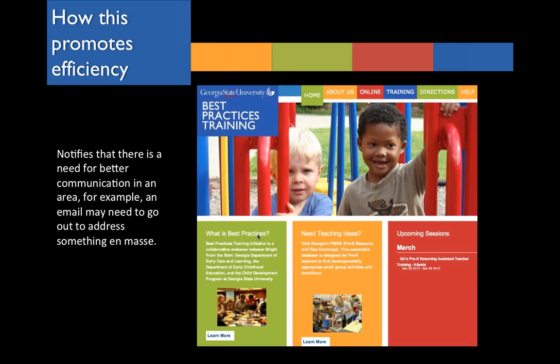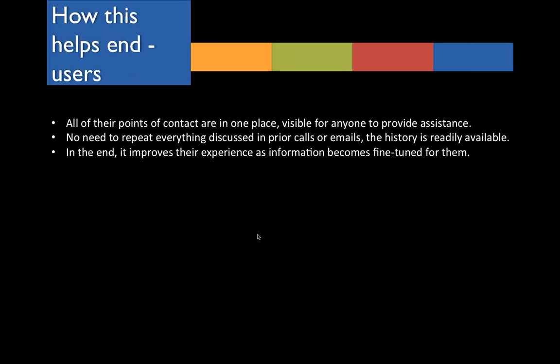So how does this promote efficiency? It improves information presented on our website, notifies us when there's a better need for communication in an area — for example, an email may need to go out to address something en masse — and program directors can see the value of having someone on the phones. Basically, Customer Relationship Manager covers your bases. And how does this help our end users? Their points of contact are in one place, so if they say they've called several times, it's all located in one place and you can browse over it. There's no need to repeat everything every time that person calls because there's a contact history. In the end, it improves their experience as information becomes fine-tuned for the end user.